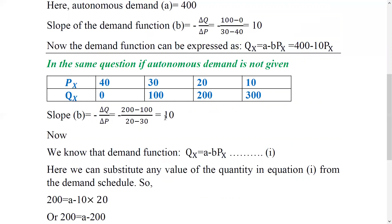Now we need to find out the autonomous demand and derive the full linear demand function. We need to find out QX equals A minus BPX.